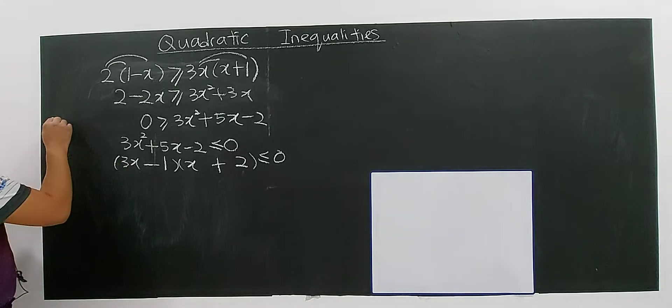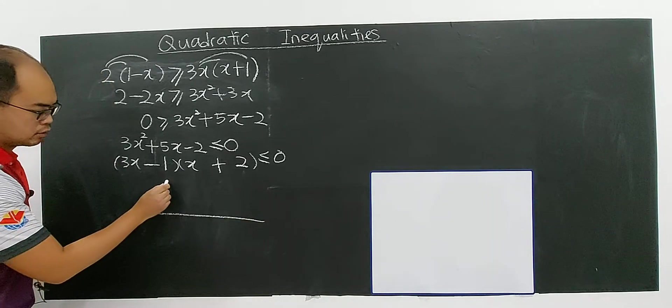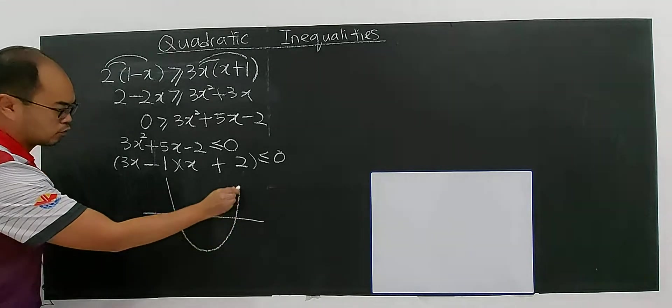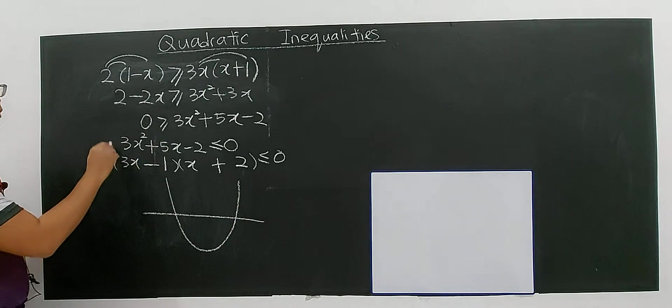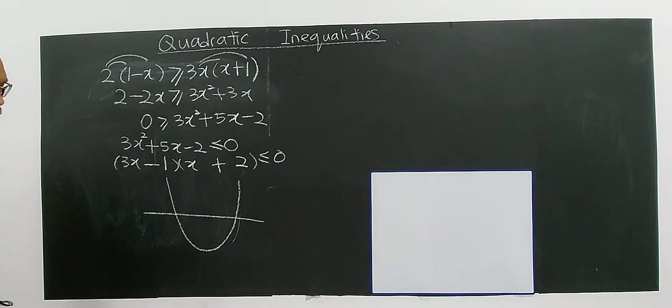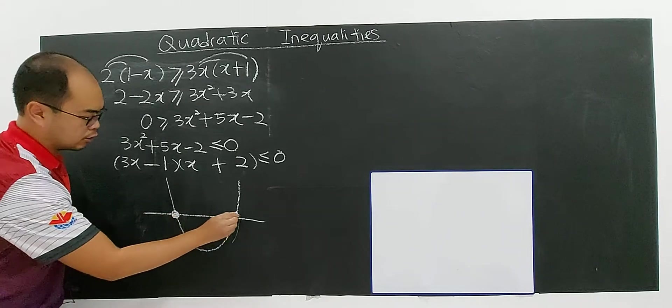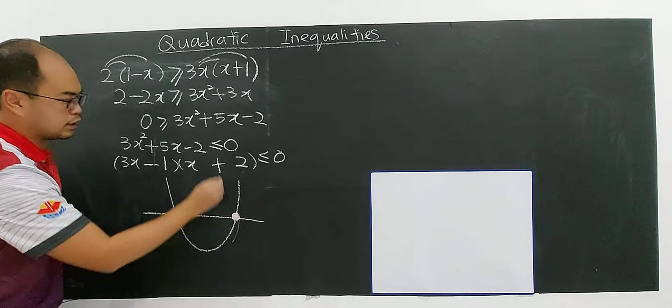Now, I have to, in my mind, I will draw using graphical approach. I draw a quadratic. Since the quadratic is positive, I have to open upwards. In this case, I'm going to include the roots of this quadratic.